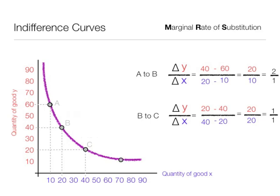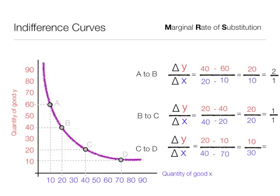Now if I continue on and I'll add point D. So I'm going to move from C to D and calculate the marginal rate of substitution. So I look at the change in y divided by the change in x again. That's 20 minus 10 and 40 minus 70. This is equal to 10 divided by 30. So the consumer is willing to give up 10y to get 30x, or a 1 to 3 ratio.